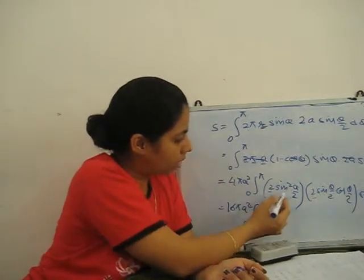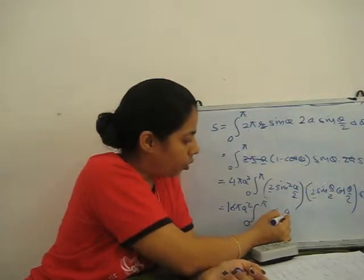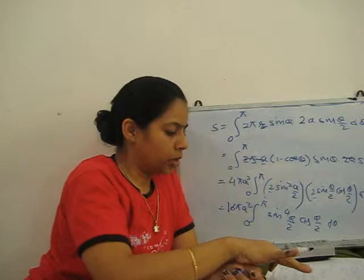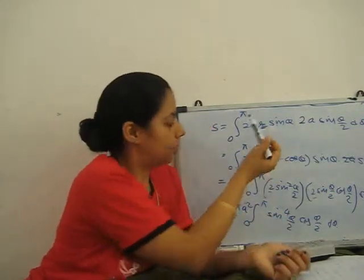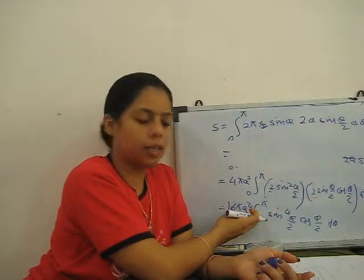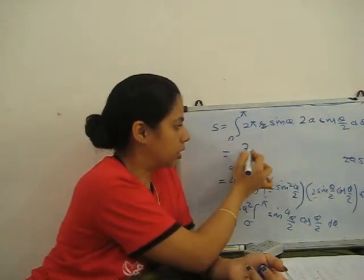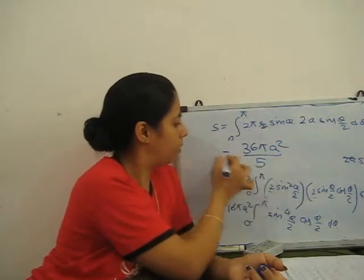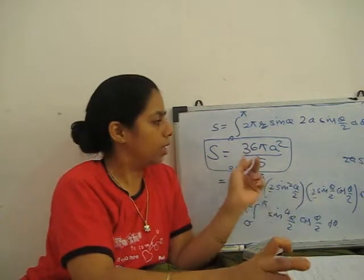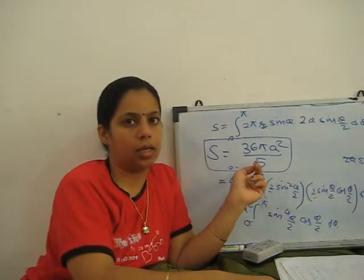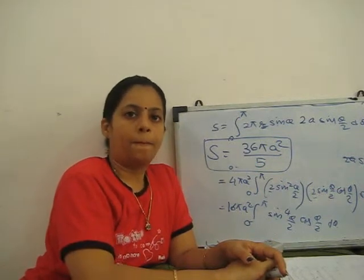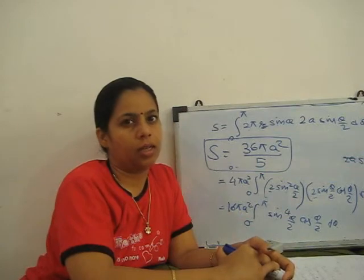Now just integrate it and the surface area for this polar cardioid, when revolved about the initial line, equals 36πA²/5. This is all about the surface area of revolution. Just remember the formulas, then substitute and solve. You can easily get the answer. Thank you very much.